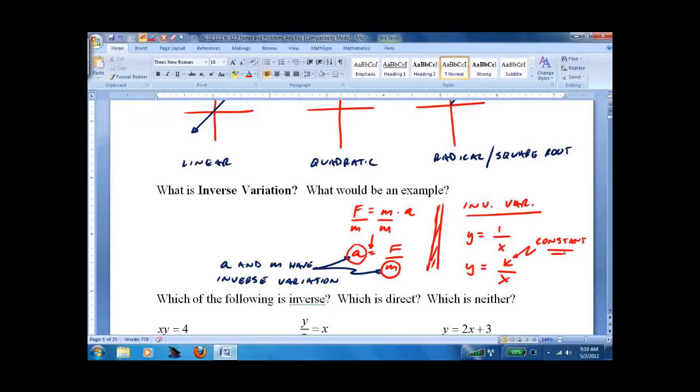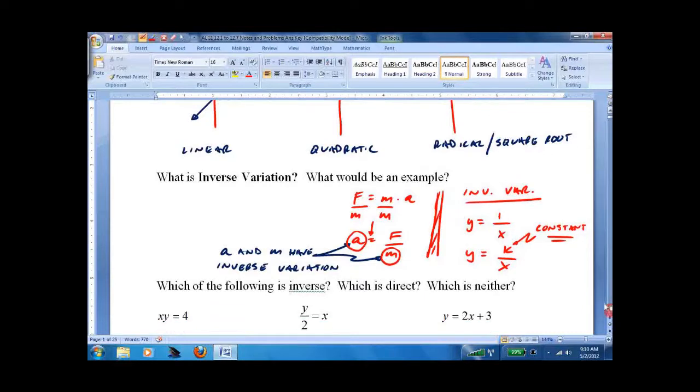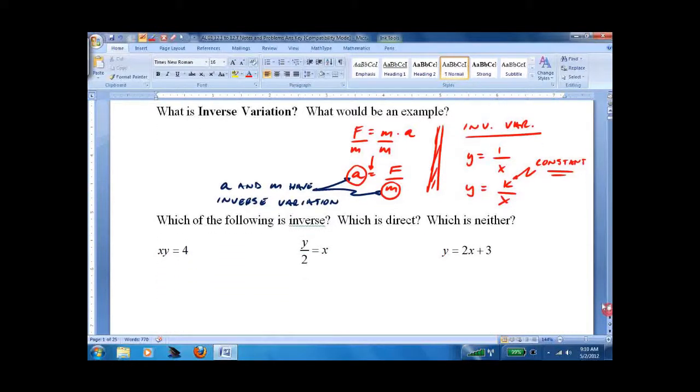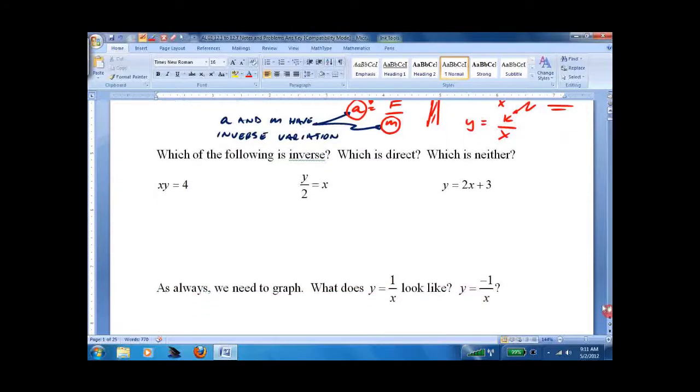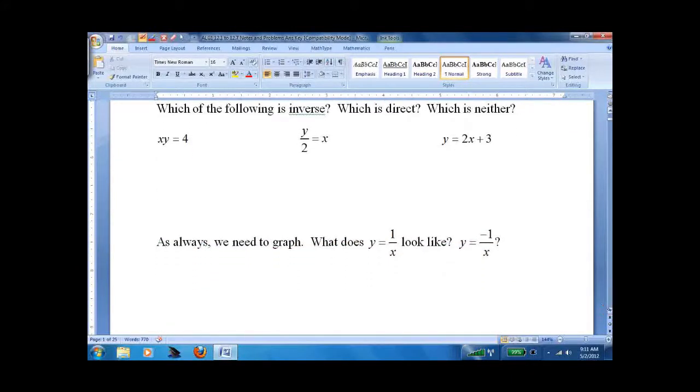2, negative 3, 1 half, whatever. That's Inverse Variation. We'll graph it so you can see what it looks like. But for now, the best way to understand it completely is to say, which one of the following is Inverse?